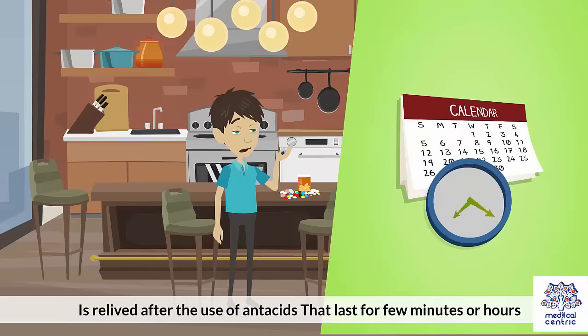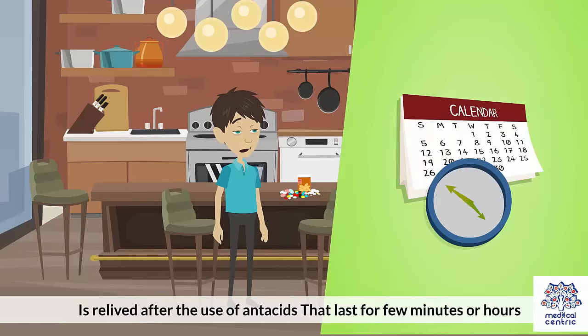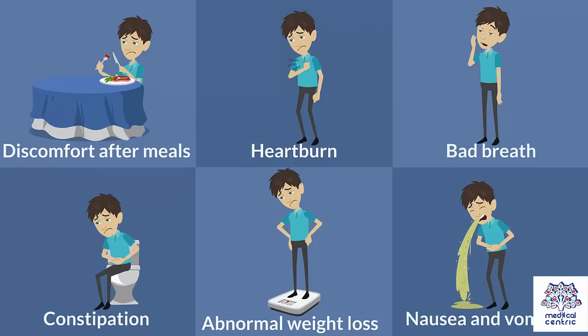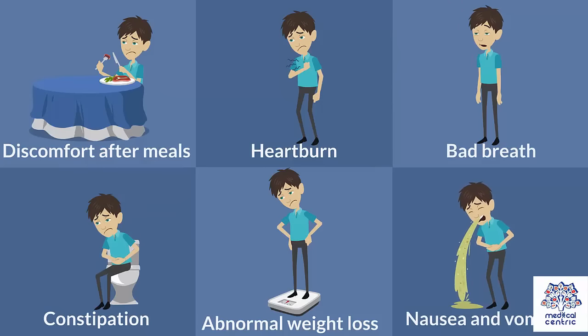Symptoms. Abdominal pain that starts between meals or at night, and is relieved after the use of antacids, lasting for a few minutes or hours. Discomfort after meals, heartburn, bad breath, and constipation.